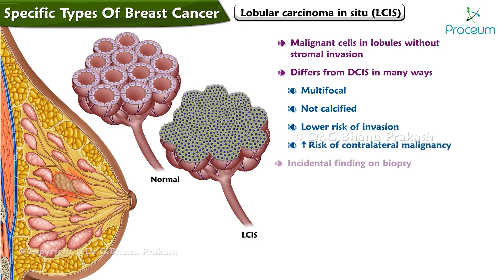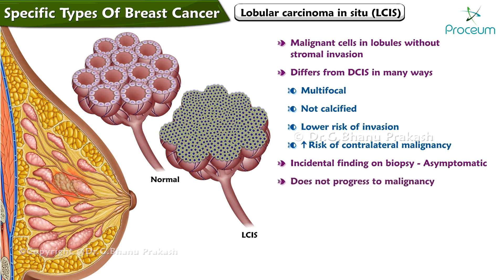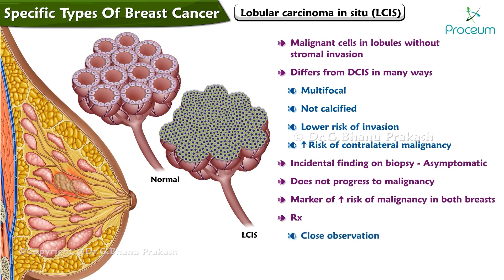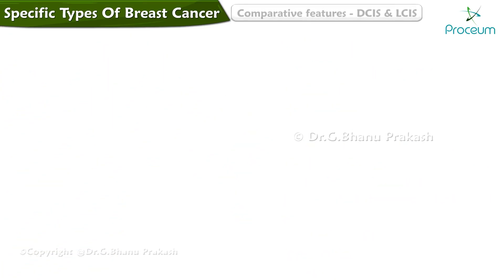Lobular carcinoma in situ is typically an incidental finding on biopsy because it is asymptomatic. It does not progress directly to malignancy but is a marker of increased risk of malignancy in both breasts. Treatment consists of close observation and the use of tamoxifen or raloxifene.